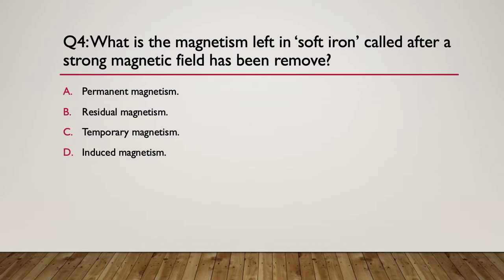Question four: what is the magnetism left in a soft iron called after a strong magnetic field has been removed?